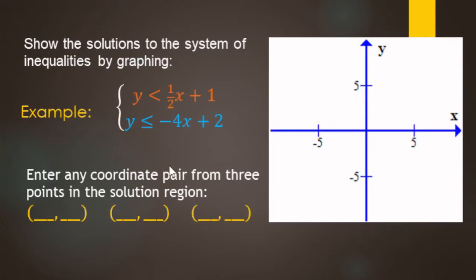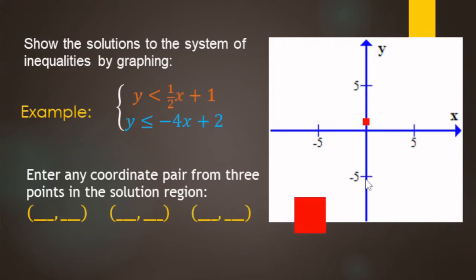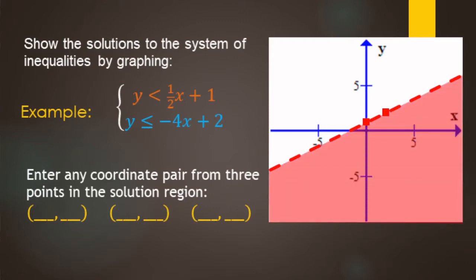For this example we're going to be graphing all the ordered pairs that make both inequalities true. Both are in slope-intercept form (mx + b). Start with the y-intercept at one, then the slope is up one and right two. It's strictly less than, so the boundary line is dashed, and we shade below the boundary line.